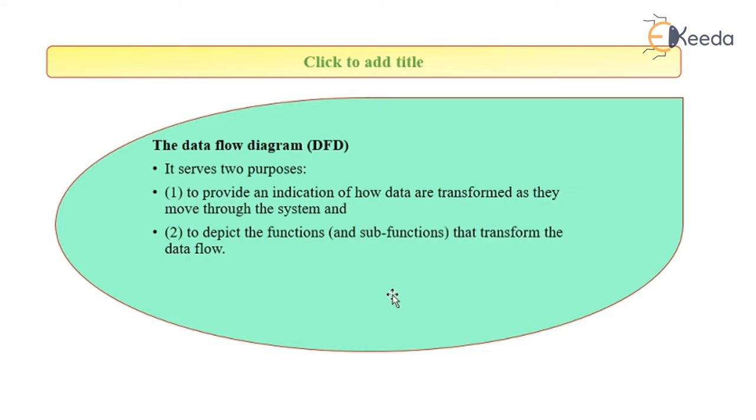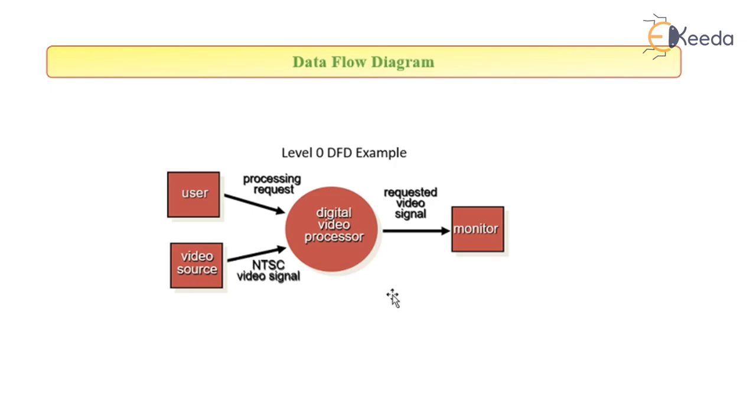So basically in a data flow diagram we have processes and data flowing from different processes. In level zero, it broadly describes what is the process, what is the system, and what are the elements through which the information is flowing. My example is a digital video processor. The data is flowing from the user for processing the request and from the video source for the video signals. The output is given to the monitor. This is a flow of information taking place in a digital video processor. This is an example of a DFD.